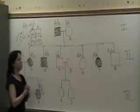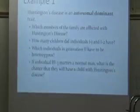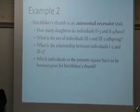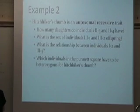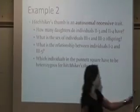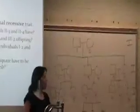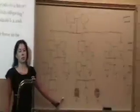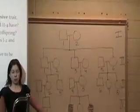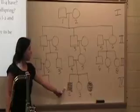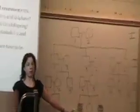Let's do another example. Hitchhiker's thumb is an autosomal recessive trait. This means that an individual is going to have to be homozygous recessive to display this trait. When we look at this pedigree as compared to the first one, you can see that we don't have as many shapes colored in. This is typical of an autosomal recessive inheritance pattern. It's not until we get to Generation 4 that we even see individuals that have this trait.